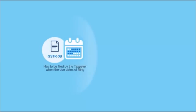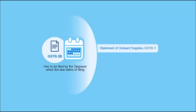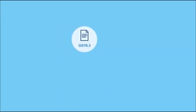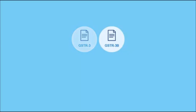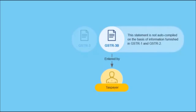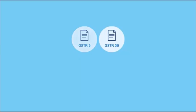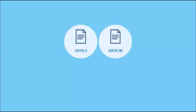GSTR 3B has to be filed by the taxpayer when the due dates of filing of statement of outward supplies GSTR 1 and the statement of inward supplies GSTR 2 are extended. Like GSTR 3, the GSTR 3B statement is a summary of a taxpayer's liabilities and availed input tax credits as well as the payment of liabilities. However, unlike GSTR 3, all the figures in GSTR 3B are entered by the taxpayer himself and this statement is not auto-compiled on the basis of information furnished in GSTR 1 and GSTR 2. This video will introduce you to the filing of GSTR 3 and GSTR 3B on the GST portal.